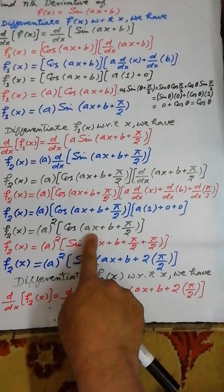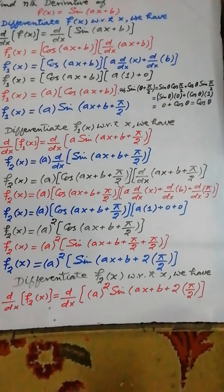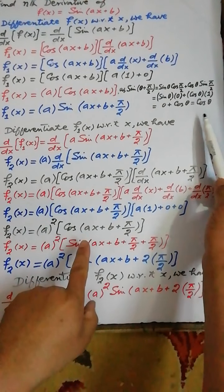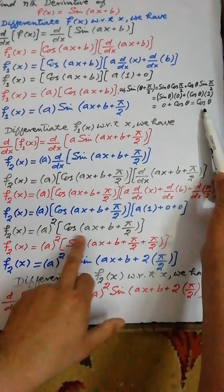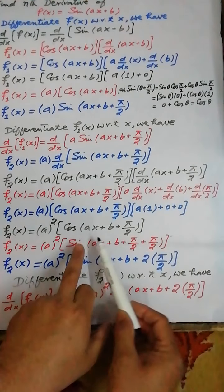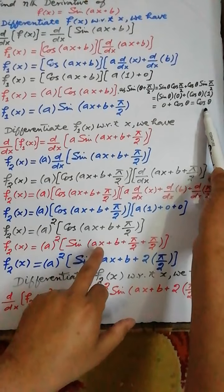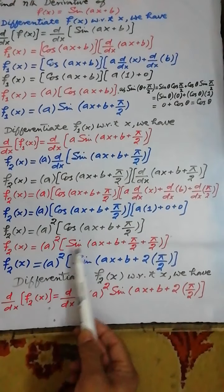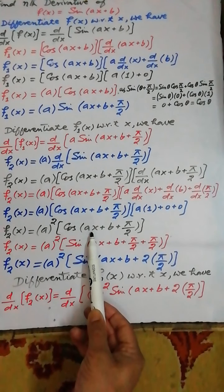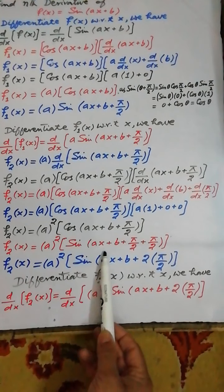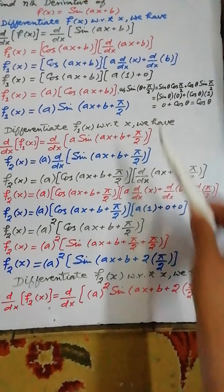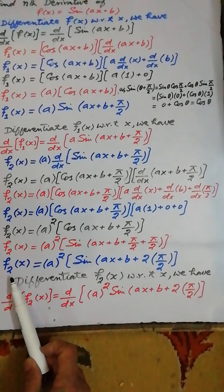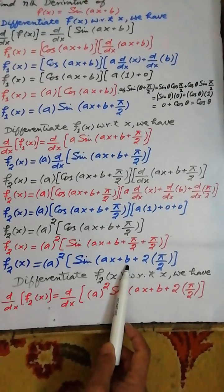Since b and π/2 are both constants, their derivatives are 0, and the derivative of x with respect to x is 1. So 1 × a + 0 + 0 = a. Therefore, a × a = a² multiplied by cos(ax + b + π/2). Applying the same trigonometric identity with θ = ax + b + π/2, cos(θ) = sin(θ + π/2), giving the second derivative equal to a²·sin(ax + b + 2·(π/2)).